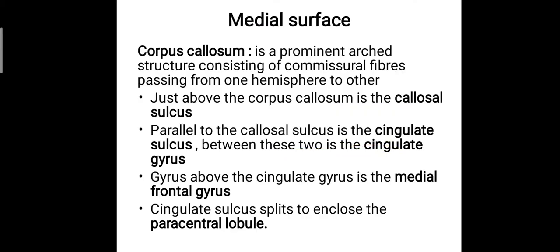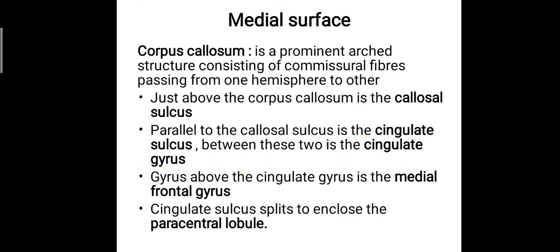The medial surface features the corpus callosum — a prominent arched structure consisting of commissural fibers passing from one hemisphere to the other. Just above it is the callosal sulcus, and parallel to that is the cingulate sulcus. Between these two sulci lies the cingulate gyrus. Above the cingulate gyrus is the medial frontal gyrus, which lies in the frontal lobe. The cingulate sulcus also splits to enclose the paracentral lobule.